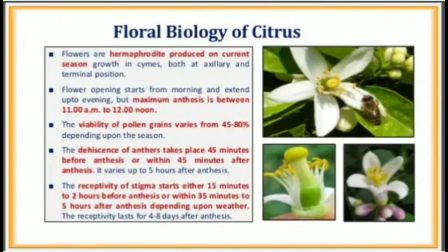Floral Biology of Citrus: Flowers are hermaphrodite, produced on current season's growth, both at axillary and terminal positions. Flower opening starts from morning and extends up to evening, but maximum anthesis is between 11 a.m. to 12 p.m. The viability of pollen grains varies from 45 to 80 percent depending upon the season. The dehiscence of anthers takes place 45 minutes before anthesis or within 45 minutes to 5 hours after anthesis. The receptivity of stigma starts 15 minutes to 2 hours before anthesis or within 35 minutes to 5 hours after anthesis depending upon weather, and lasts for 4 to 8 days.